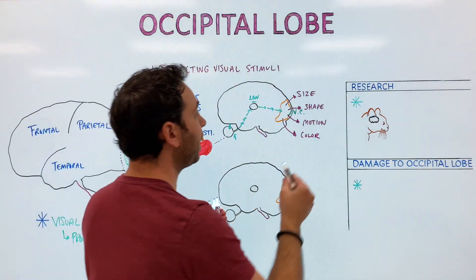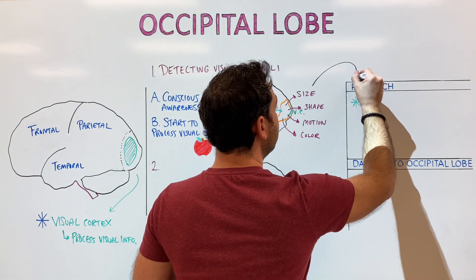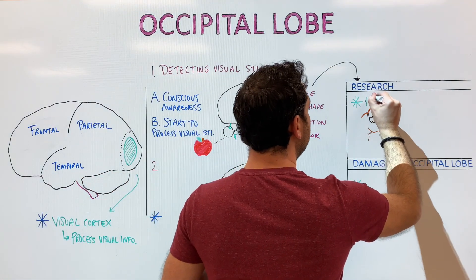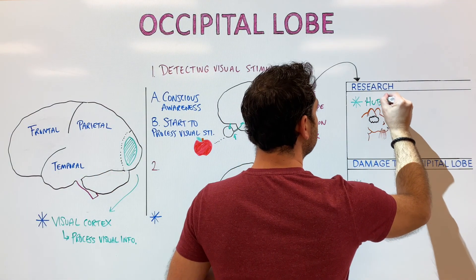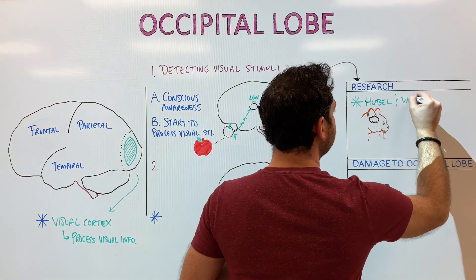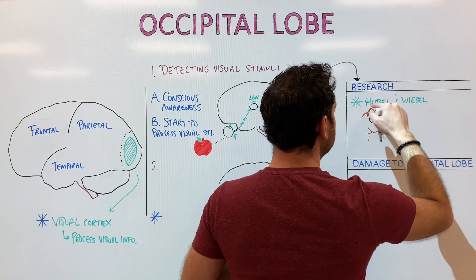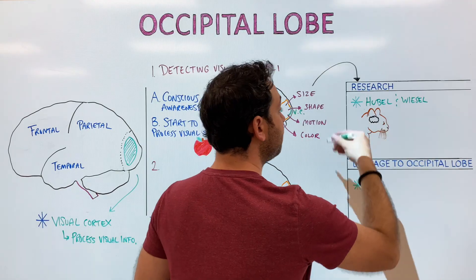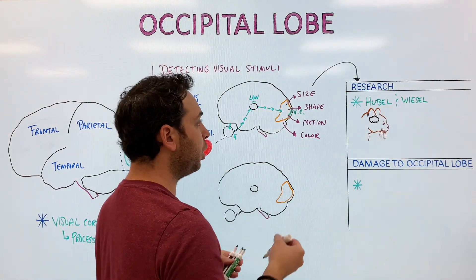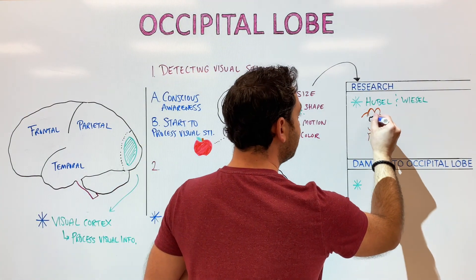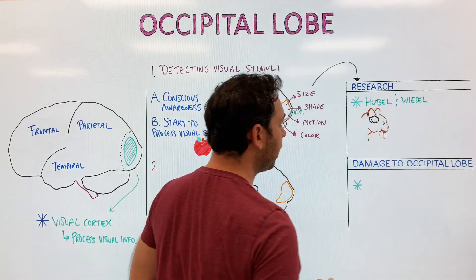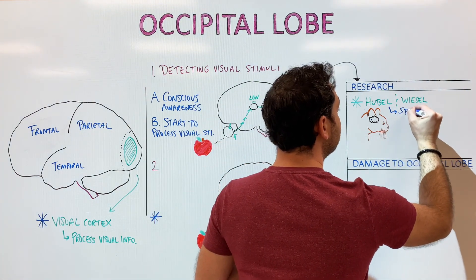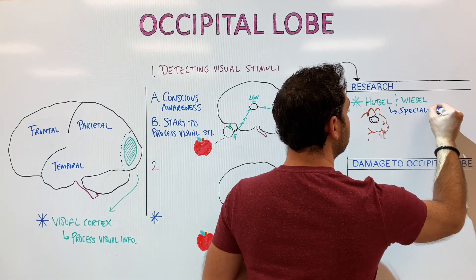There's a lot of good research that deals with this initial stage of processing. This research was done by Hubel and Wiesel, and their research — which they won the Nobel Prize for — was on specialized neurons within the visual cortex. They kind of helped us map out what the visual cortex does. They placed electrodes within a cat's brain, isolated these neurons, and found that every neuron has a specialty. They discovered the idea of specialized neurons.